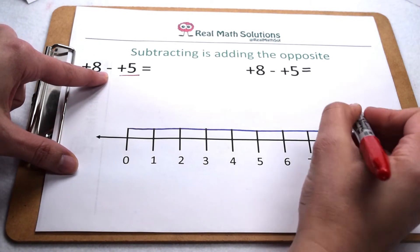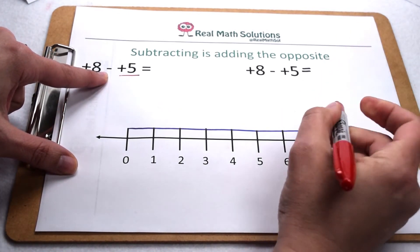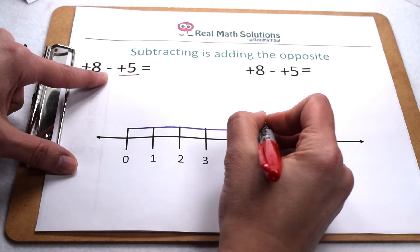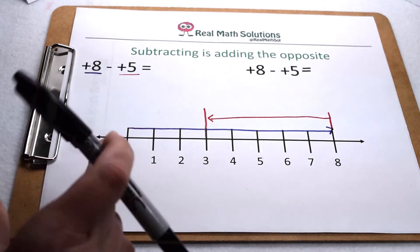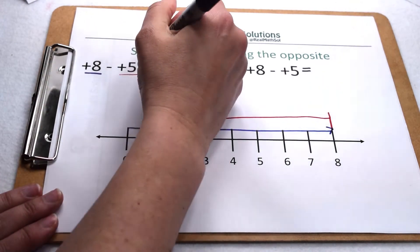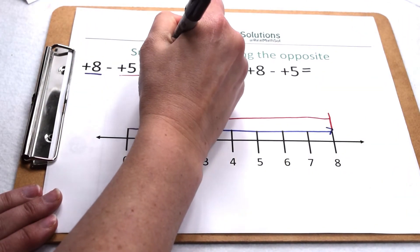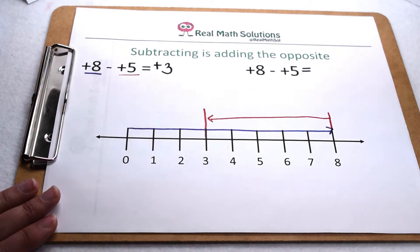but I want to take away those. Instead, that's going to send me back the opposite direction, 5 places back to the left. When we do that, we wind up at positive 3. Positive 8 minus positive 5 leaves me with positive 3.